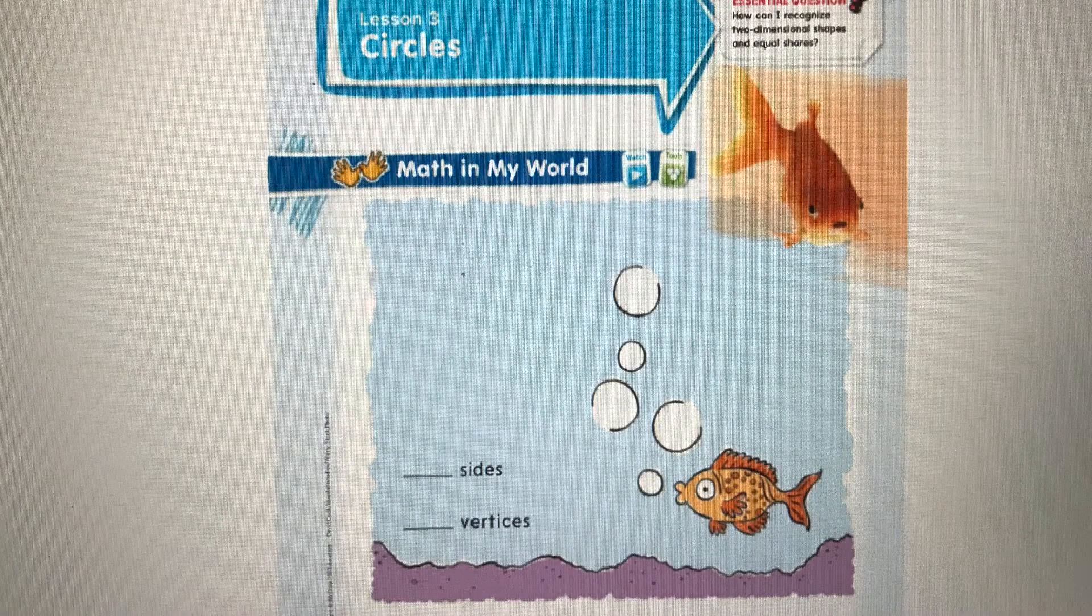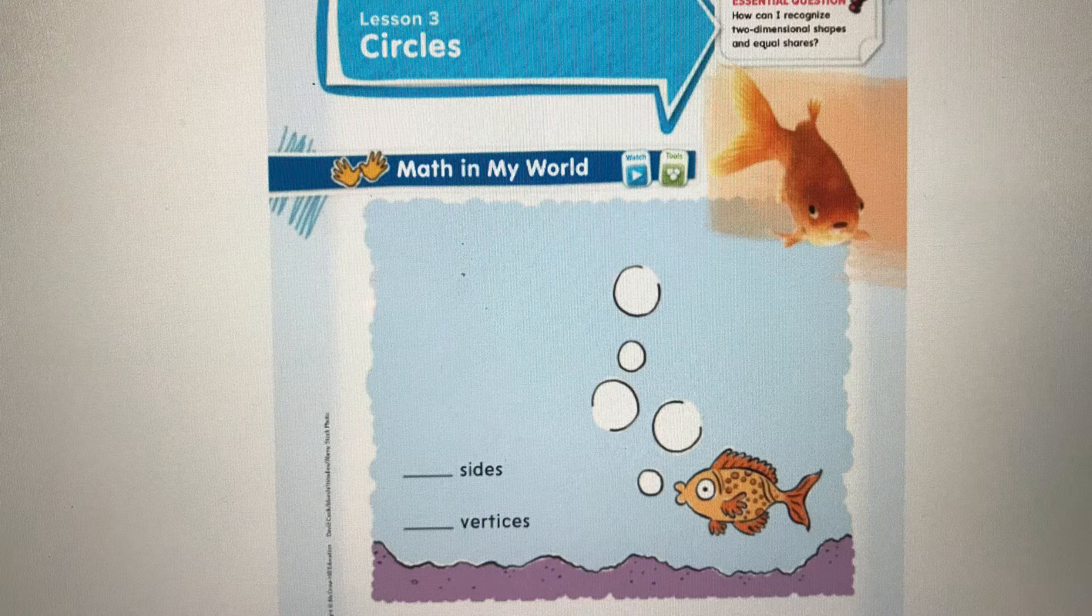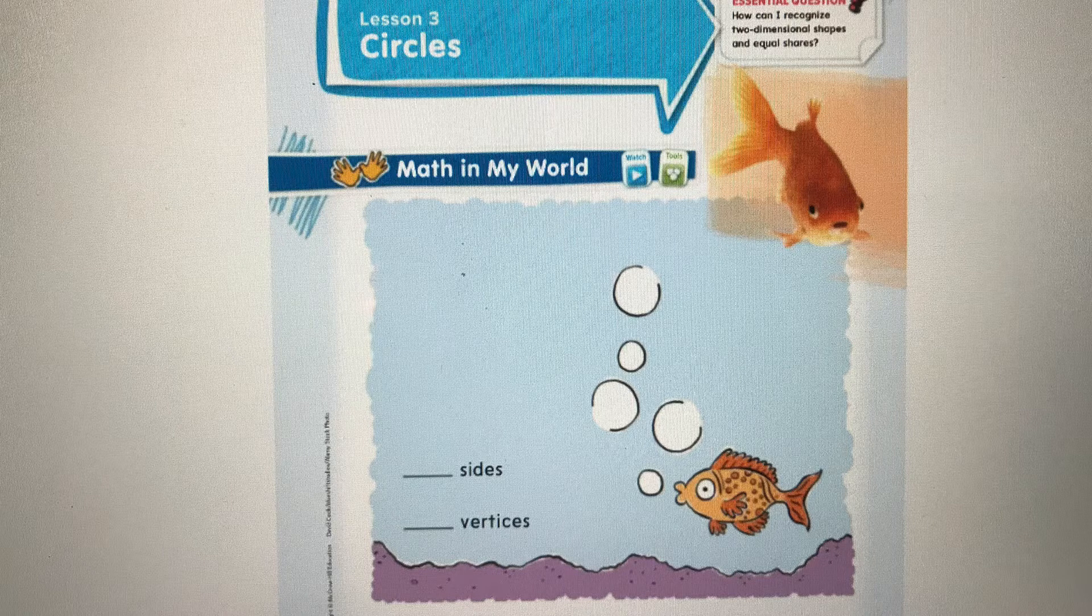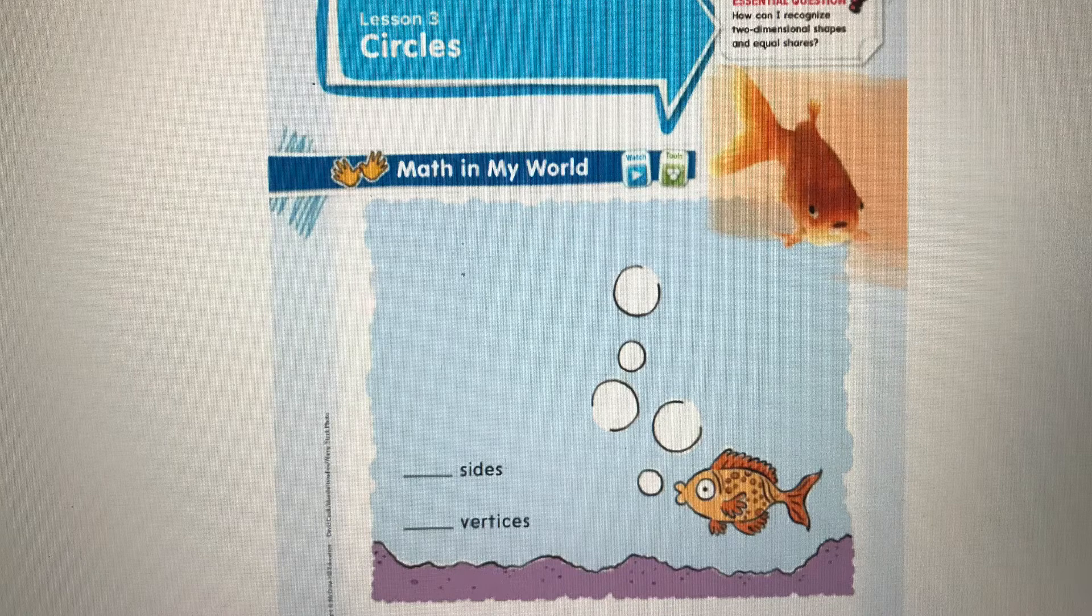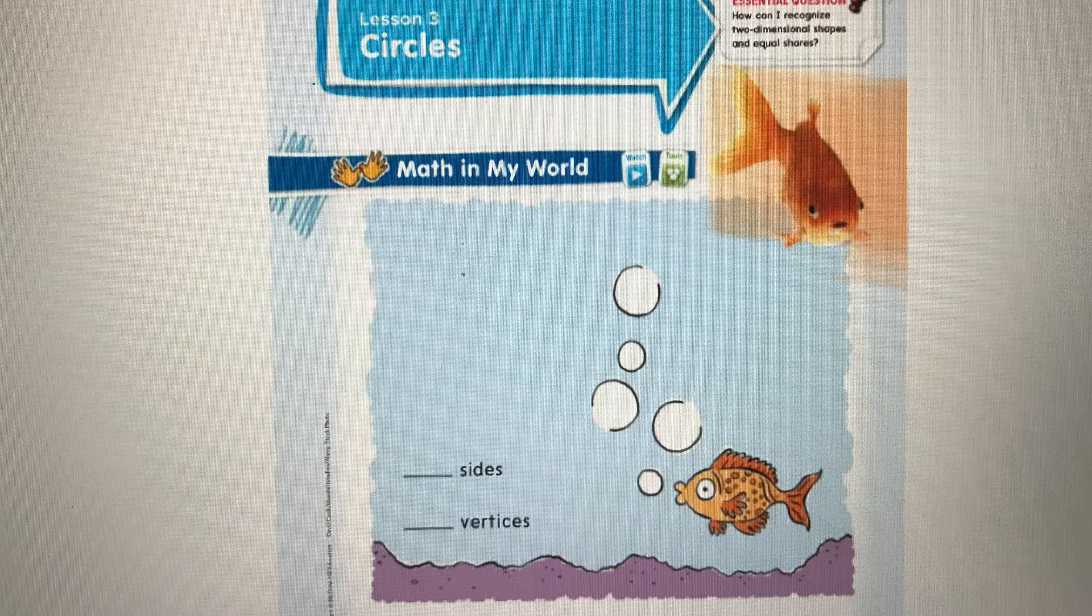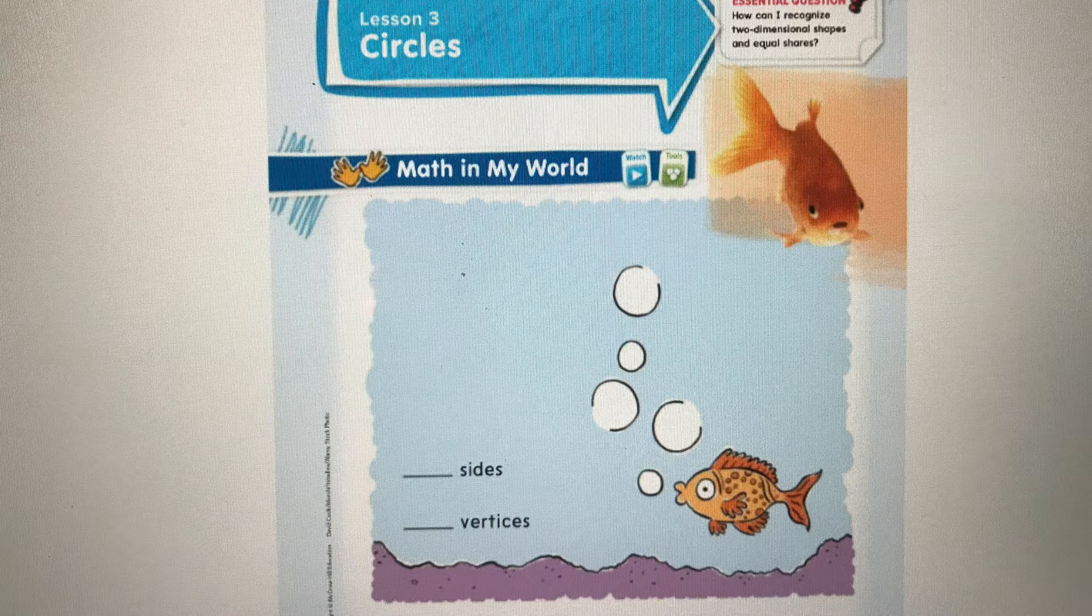Today, boys and girls, we're going to talk about circles. A circle is a closed shape with no vertices or sides. Fish blow bubbles and when they blow a bubble, the shape can be a circle. If you look at this fish, he blew some bubbles that were closed and some that were accidentally open. So you need to have your pencil out because what we're going to do is close those circle shapes that he blew.